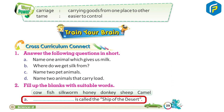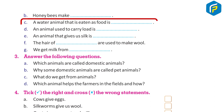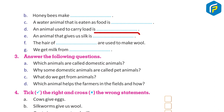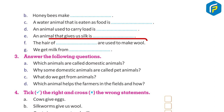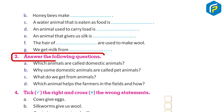c) A water animal that is eaten as food is dash. d) An animal used to carry load is dash. e) An animal that gives us silk is dash. f) The hair of dash are used to make wool. g) We get milk from dash.